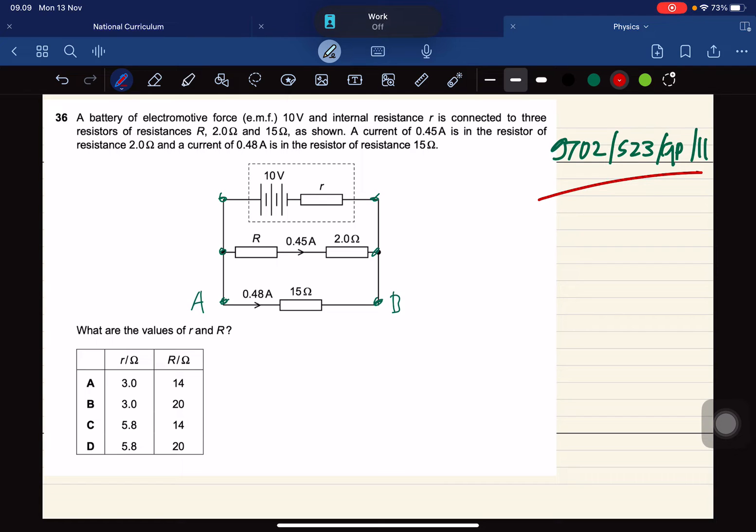Hello everyone, this is a question from 9702 summer 23 question paper 1. A battery of electromotive force EMF 10 volt and internal resistance R is connected to three resistors of resistance R, 2.0 ohms and 15.0 ohms. A current 0.45 amperes in the resistor of resistance 2.0.